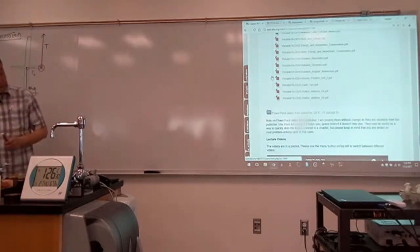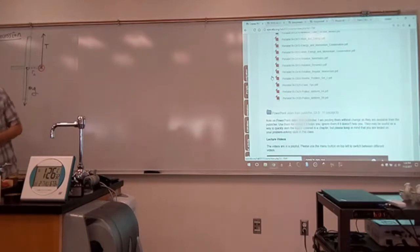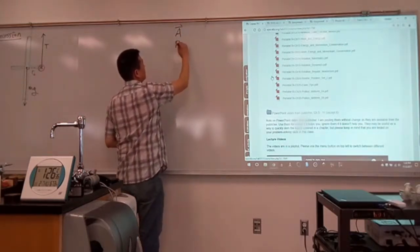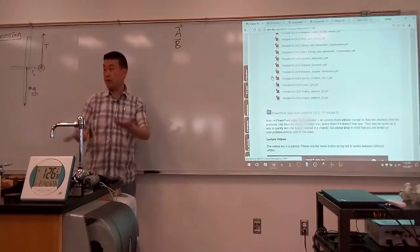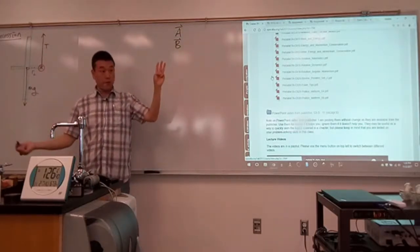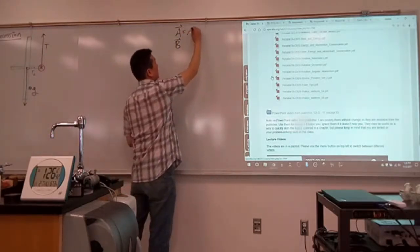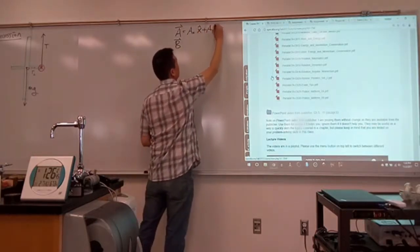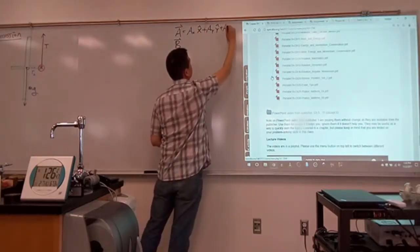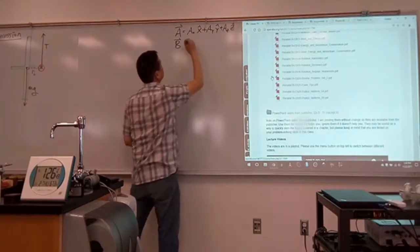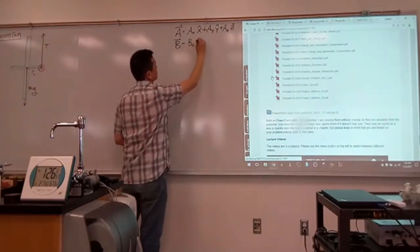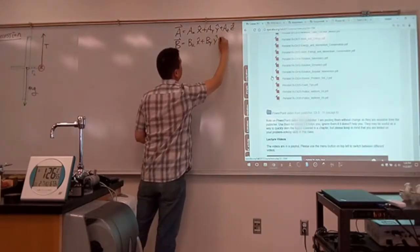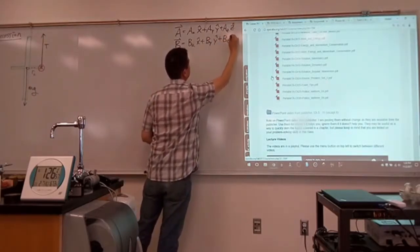If you have two vectors A and B, then these two vectors would have three vector components. A = AX x̂ + AY ŷ + AZ ẑ. And B would be BX x̂ + BY ŷ + BZ ẑ.